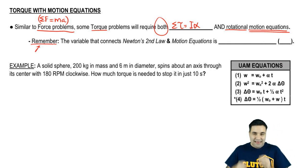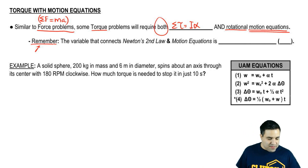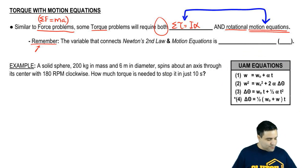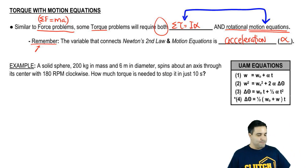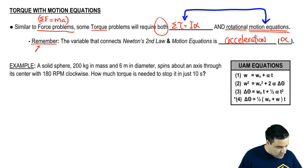Remember, just like how it was with linear motion, the variable that will connect torque equals I-alpha to the rotational motion equations is going to be acceleration. Because we're talking about rotation, this means alpha. Notice how there's an alpha here, and there's an alpha here, here, and here.